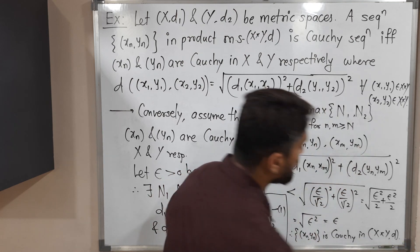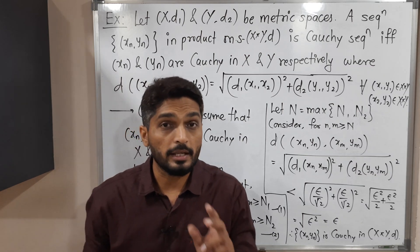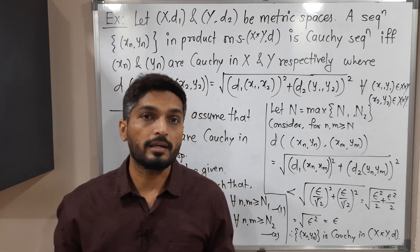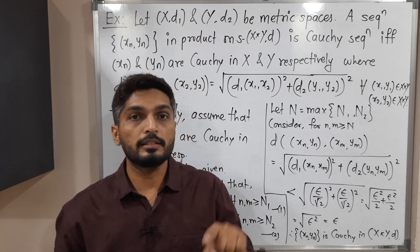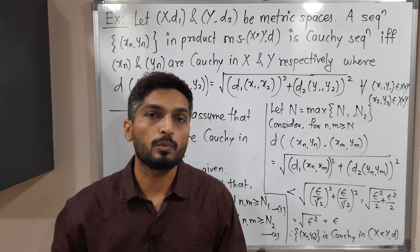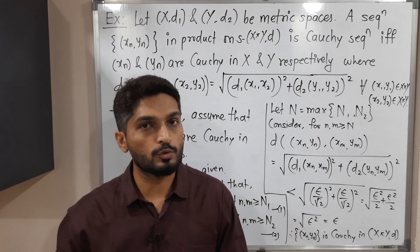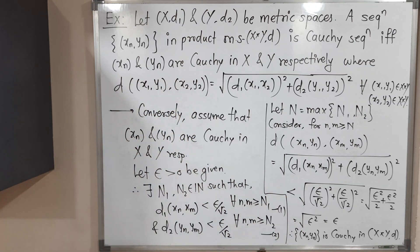So in this way, we proved that a sequence (xn, yn) is Cauchy in X cross Y if and only if xn is Cauchy in X and yn is Cauchy in Y. Proof is over here. Thank you. See you.